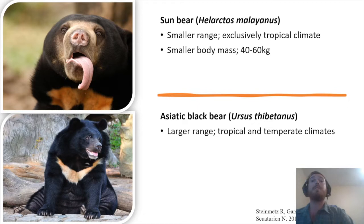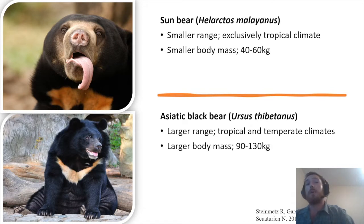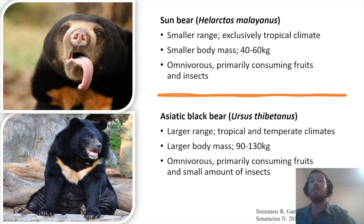There is also a significant size difference between these bears. The sun bear is much smaller, weighing roughly only 40 to 60 kilograms, while the Asiatic black bear is much larger, weighing anywhere from 90 to 130 kilograms. They are both omnivorous and feed primarily on fruit and insects, but the sun bear has been found to be slightly more insectivorous than the Asiatic black bear.